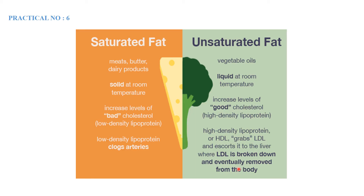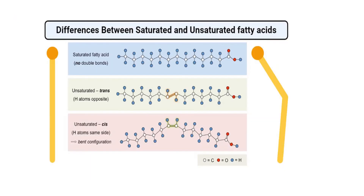Saturated fatty acids have no double bonds — only single bonds — while unsaturated fatty acids can have one or more double bonds. Saturated fatty acids are solid, and unsaturated fatty acids are liquid. Saturated fats increase bad cholesterol (LDL), while unsaturated fats increase good cholesterol (HDL). In unsaturated fatty acids, if there is any double bond, it can be either trans or cis configuration.